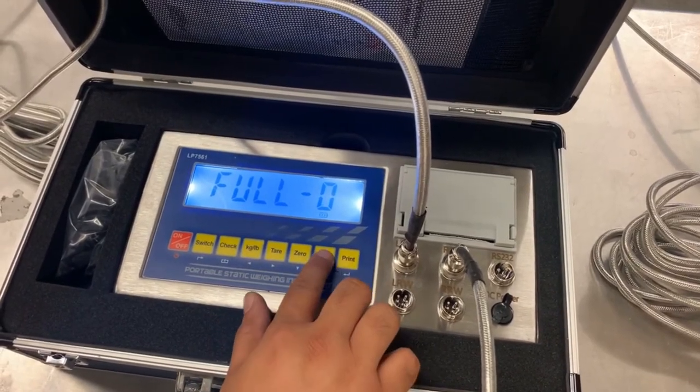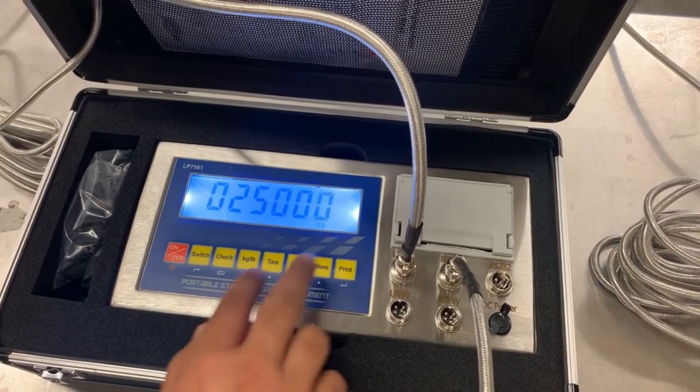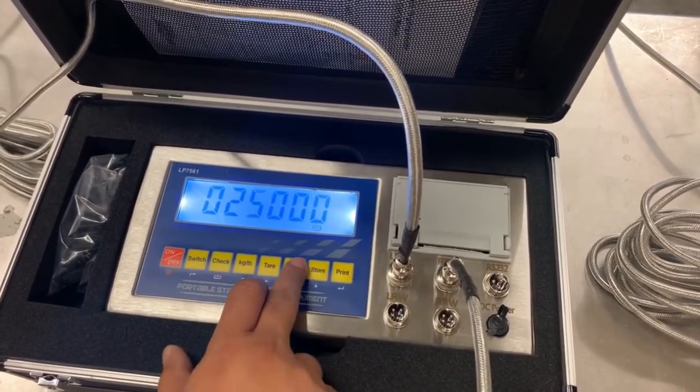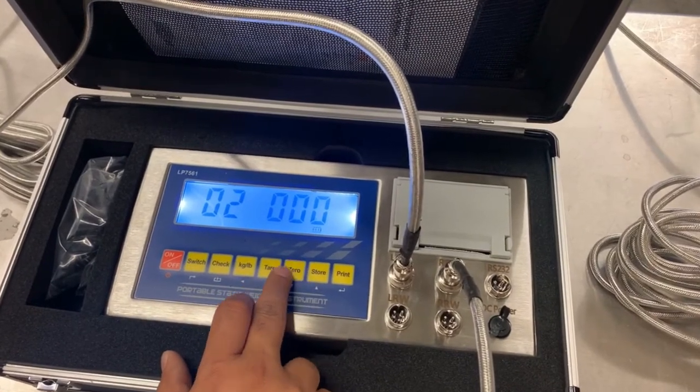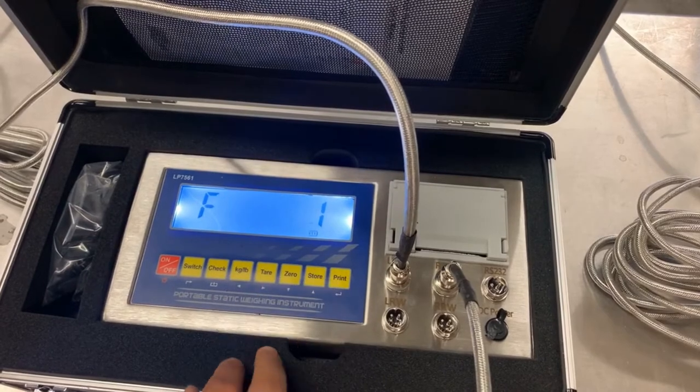Here is where you would enter the capacity of the scale. You'll go up to one and press print, and then from here you could enter the capacity of both weight pads. For two weight pads it's going to be 50,000 pounds.